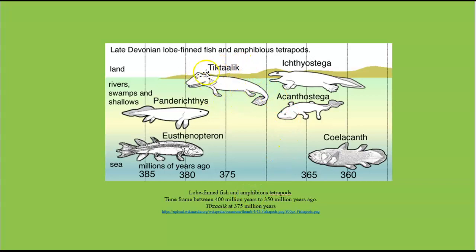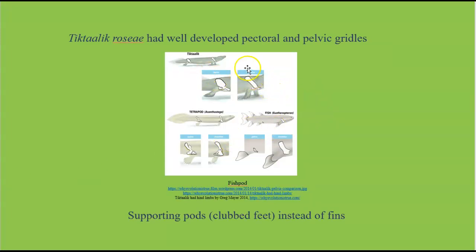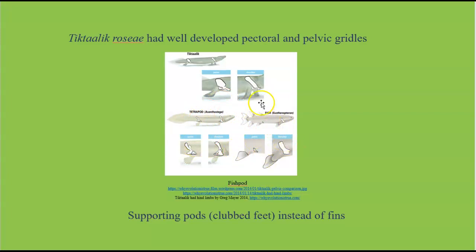The Tiktaalik showed up about 375 million years ago — you can see it right here in the fossil record, between the ocean fish and the more freshwater fish. Another thing that this shallow water environment caused was that the fins of the Tiktaalik turned into pods so that it wouldn't get tangled in the debris in shallow water. That also caused the development of a pectoral girdle and a pelvic girdle to support those pods. So when you look at the fossil record related to tetrapods — those that moved on to land — the Tiktaalik looks more like a tetrapod than it does a fish.